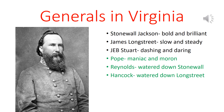Since Virginia is by far the most important front, let's look at Lee's three chief lieutenants. First, Stonewall Jackson — bold and brilliant. Second, James Longstreet — slow and steady, but he generally got the job done and was a good organizer. Third, Jeb Stuart — dashing and daring, a great cavalry chief who let Lee know what was going on around him. On the Union side: Pope, who was a maniac and a moron; Reynolds, basically a watered-down Stonewall Jackson — pretty good but could have been better; and Hancock, a watered-down Longstreet.